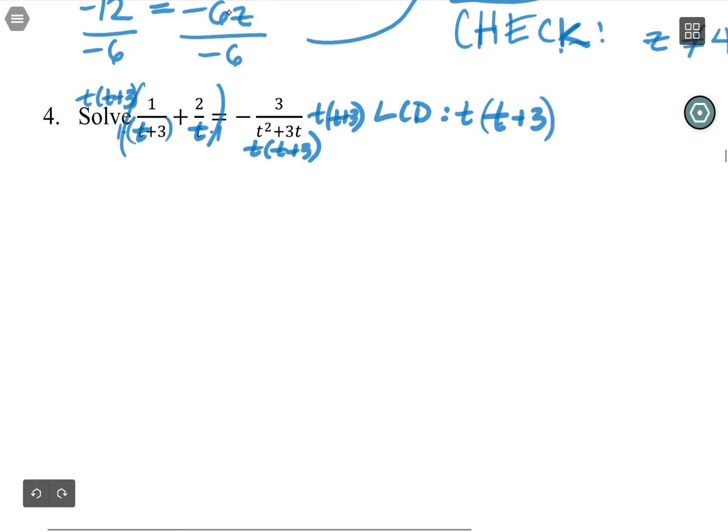Let me rewrite that so we can see what's happening. So I have t times t plus three over one times one over t plus three. I would not distribute the t into those parentheses because I'm hoping to cancel the t or the t plus three in every step. And then I have t times t plus three, multiplied by two over t. And then on the other side, the t times t plus three cancels completely. So I'm just left with the negative three.